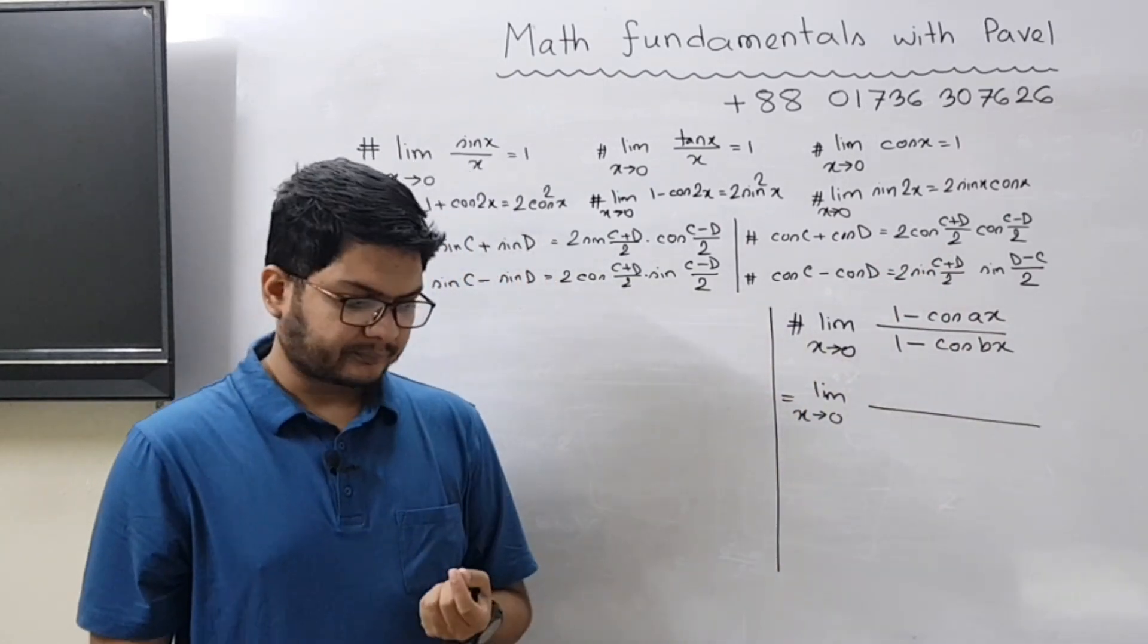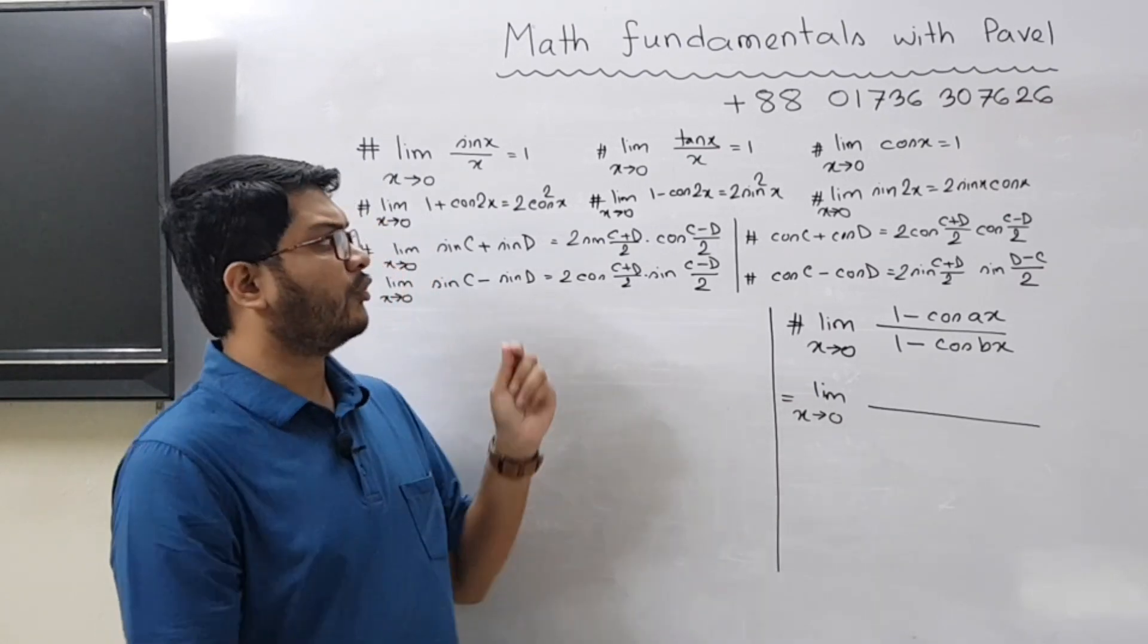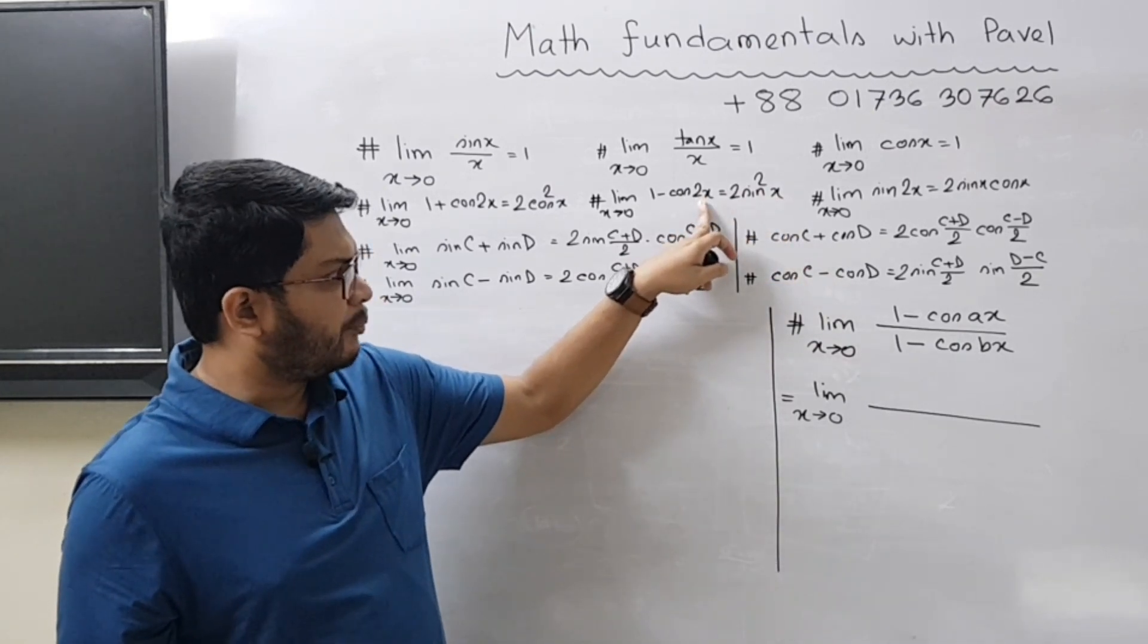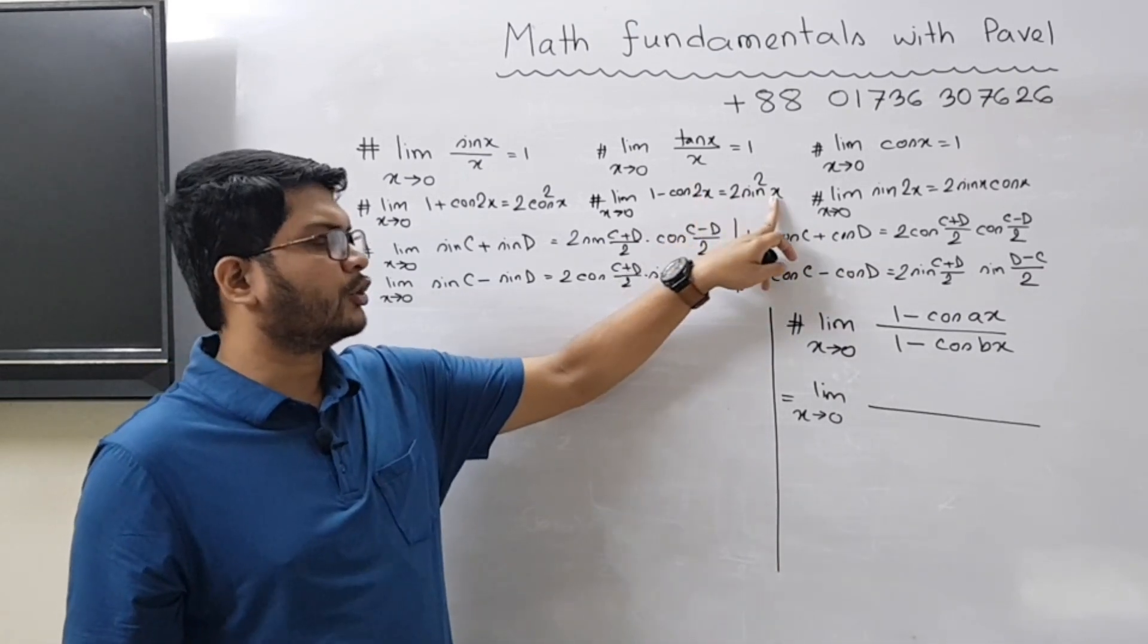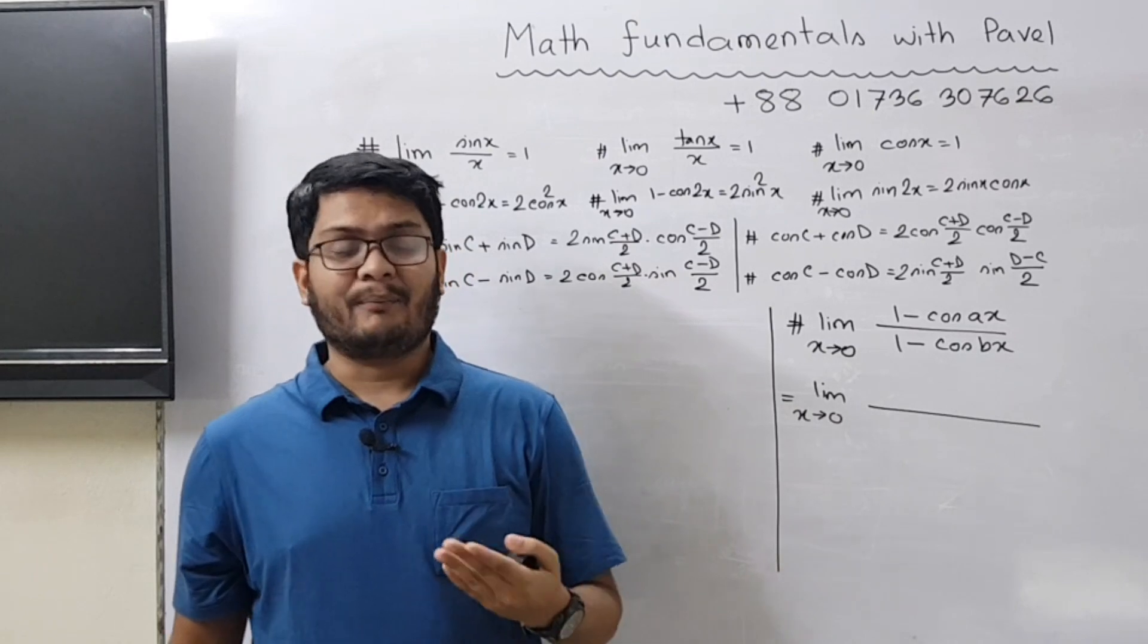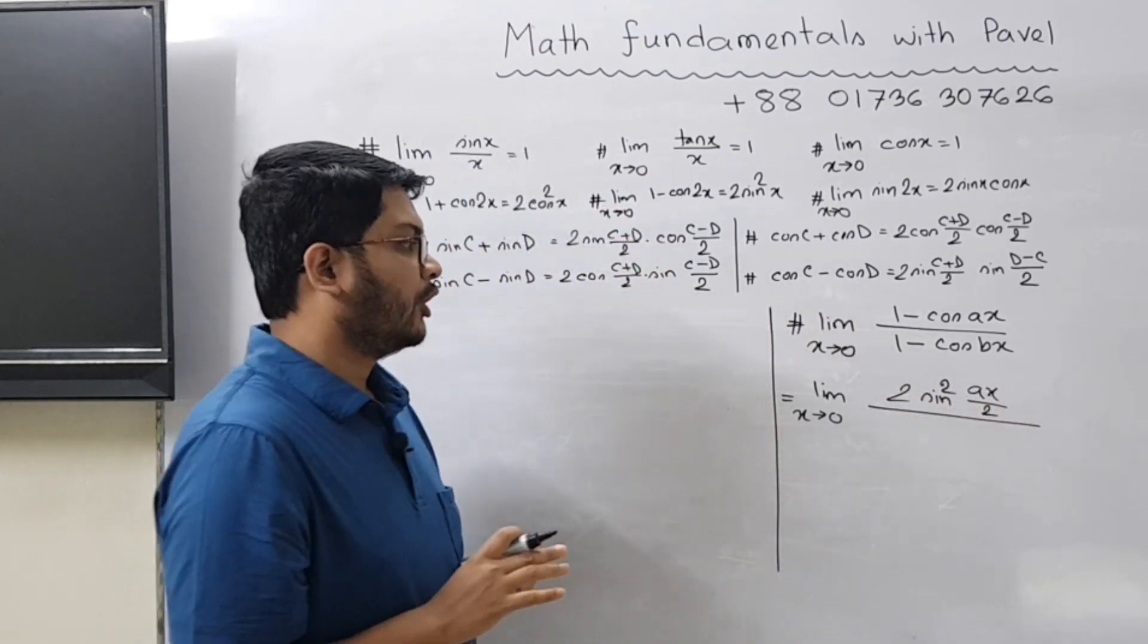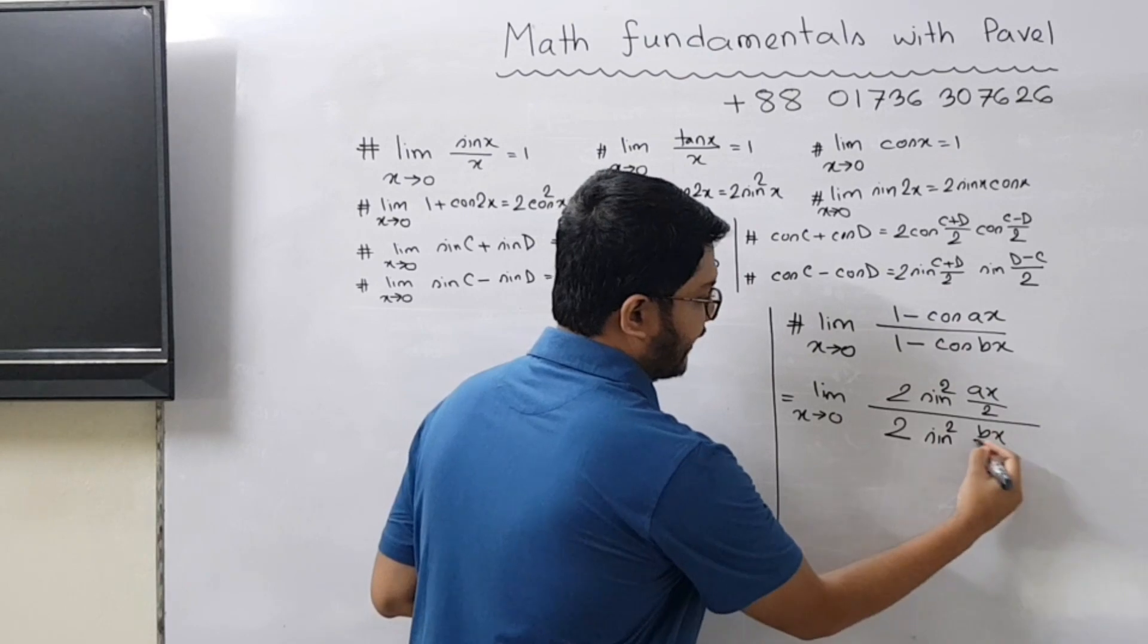So 1 minus cos 2x is 2 sin² x, but here you have cos ax. So how do you convert that? One of the tricks that I discussed with you is to remember the formula like this: whatever the value of theta here, in the right hand side it becomes half of that. So if you have 2x it became x. So if it was 4x then you would have got 2x. Now you have ax so what would that become? It would become 2 sin² (ax/2).